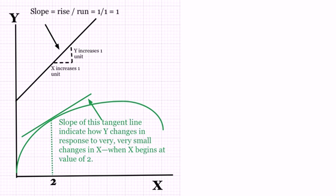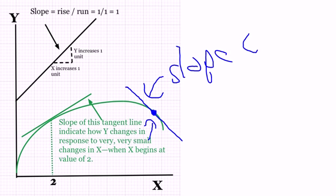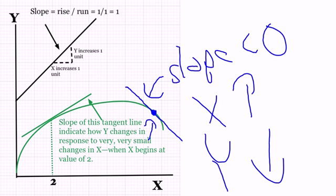For another example, suppose we go right here and study how x impacts y at this point. When we draw a tangent line, the slope is less than 0. And what that means is that when x increases, y decreases. You can tell just by looking at this function that as you move along this section, y decreases.